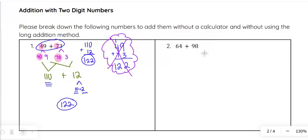Looking at number 2, looking at this one, I would probably think of this as 60 and 90 getting added together. And then also this 4 and this 8 getting added together. So, 60 plus 90, I'd start with 6 plus 9, which is 15, so 150.